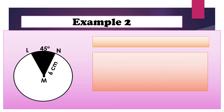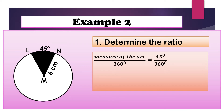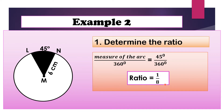Let us answer example number 2, step 1: determine the ratio. The measure of the arc is 45 degrees, so we divide 45 degrees by 360 degrees. We cancel the degree units, then determine the greatest common factor of 45 and 360, which is 45. 45 divided by 45 is equal to 1, and 360 divided by 45 is equal to 8. Therefore, the ratio is 1 over 8.